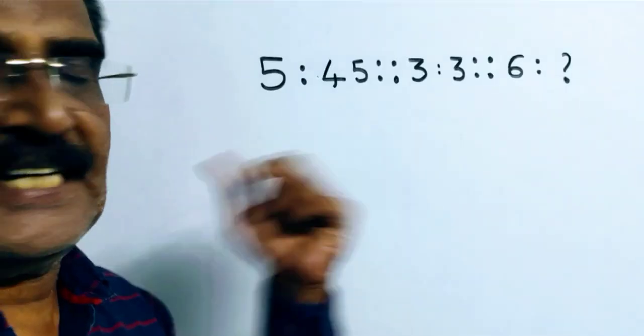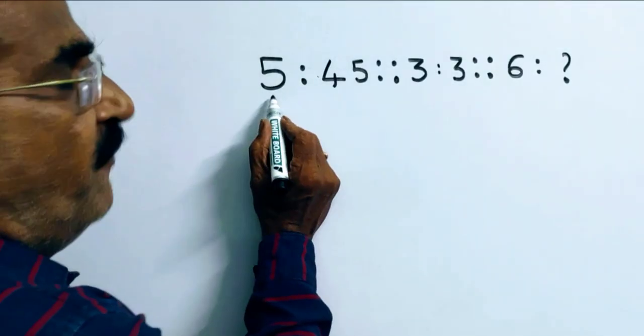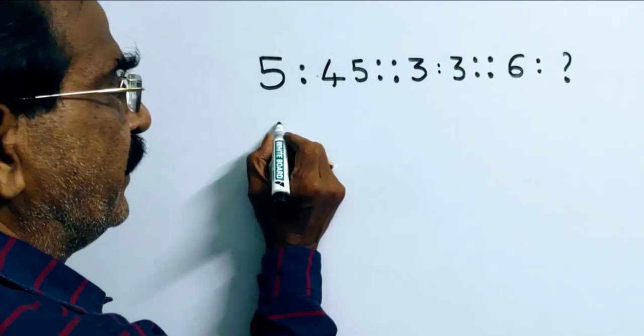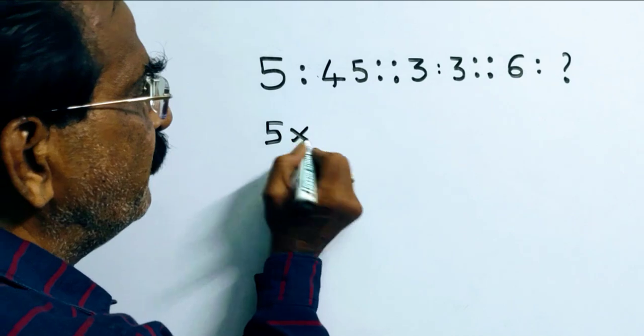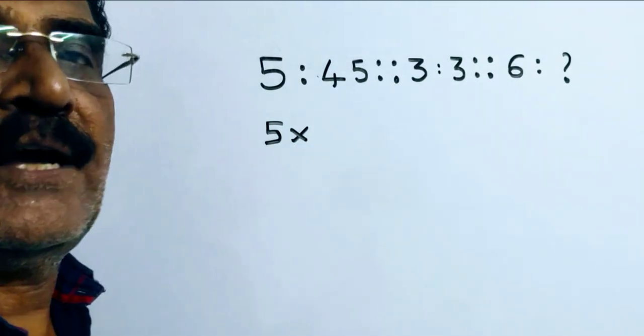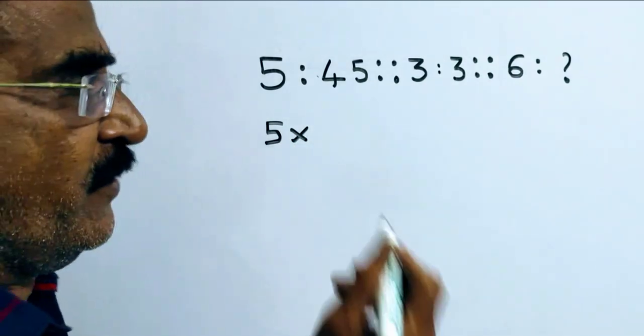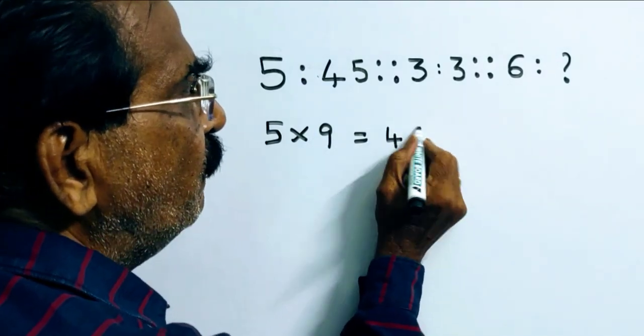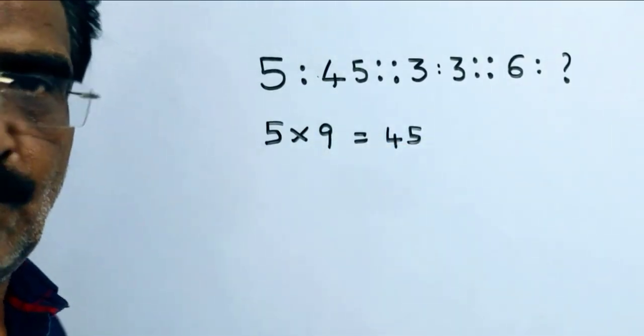See friends, this is the relation. See friends, 5 into 5 minus 2 whole square. 5 minus 2, 3, 3 square 9. So, 5 into 9, 45. So, 5 into 5 minus 2 whole square.